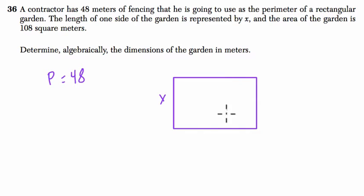And the area is 108 square meters. Determine algebraically the dimensions of the garden in meters. So if we have one side is x and the other side is x, I can call the other side whatever I want. I'll call it y. So we know that the perimeter is 48.